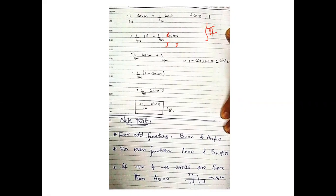As a note for the Fourier series: for even functions, bₙ = 0 and aₙ ≠ 0, because sine is an odd function — the aₙ coefficient includes a sine term, while bₙ includes cosine. For odd functions it is the opposite: aₙ = 0 and bₙ ≠ 0. Also, if the positive and negative areas under the curve are equal, then a₀ = 0.